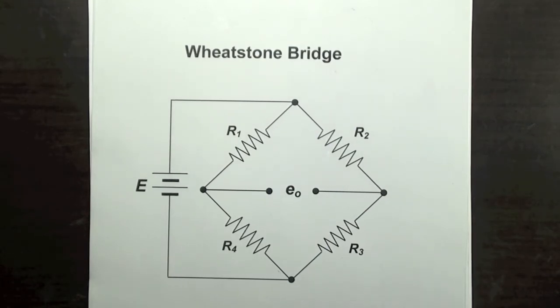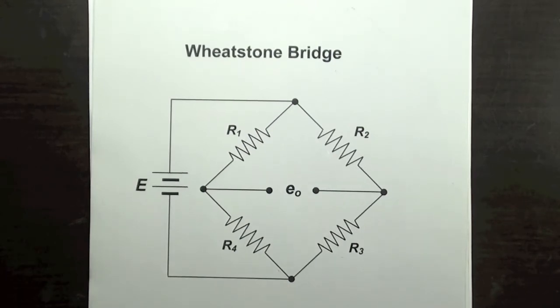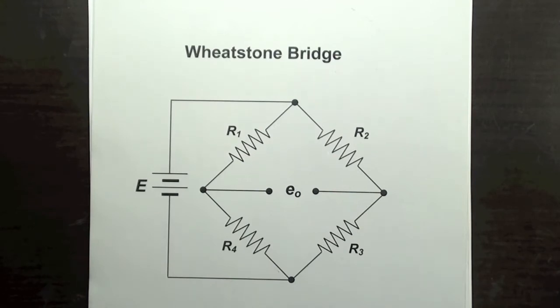When strain gauges are subjected to strain, their resistance changes by a very small amount proportional to the strain. In order to measure this small change in resistance accurately,